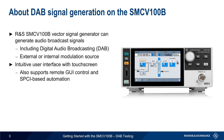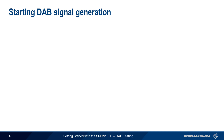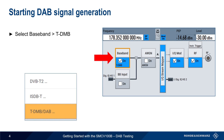Although all SMCV models support all broadcast standards, two license options are needed for the testing described in this presentation: option K519 to enable broadcast standards, and option K156 for DAB. The first step in generating DAB signals is to go to the Baseband block in the SMCV's user interface and select TDMB DAB from the list of available modulation types.